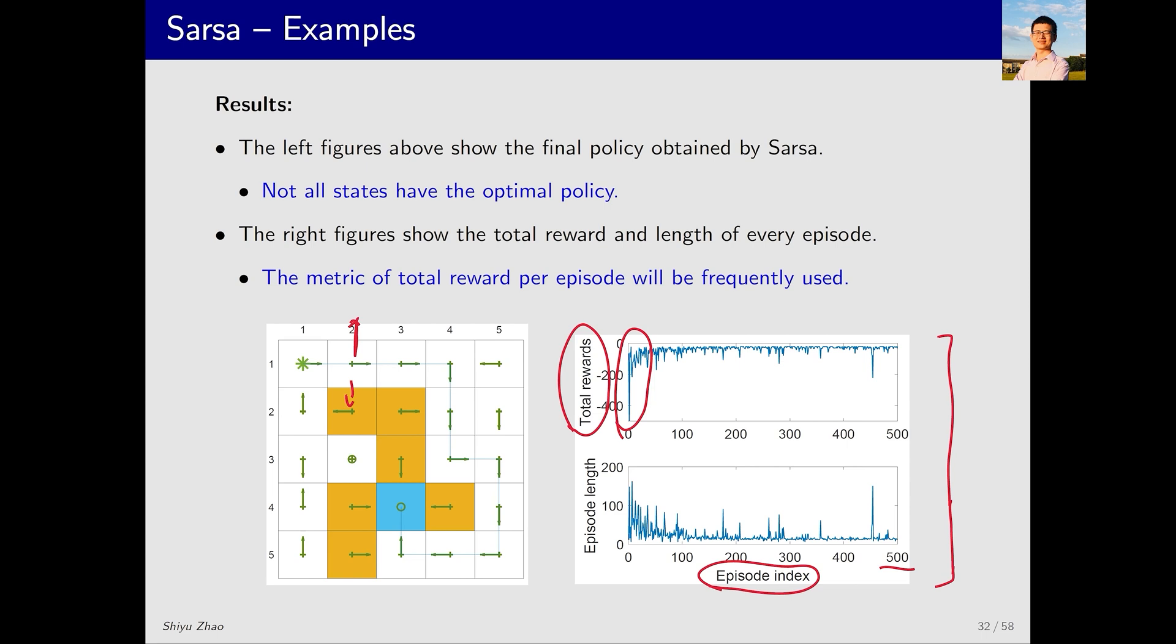The second subfigure represents the episode length. Initially, the episode length is quite long, indicating that the initial policy is poor and the agent takes many steps before reaching the target. As the policy improves, the episode length decreases. Initially, it took several hundred steps to reach the target, but with the improved policy, it now takes only a few dozen steps.